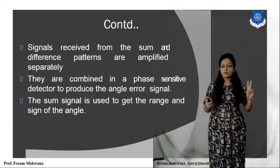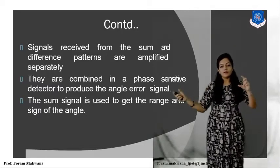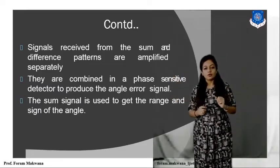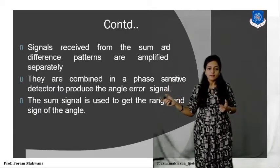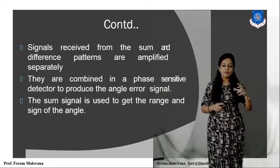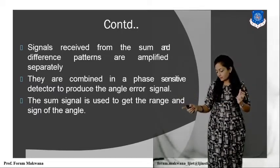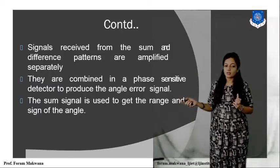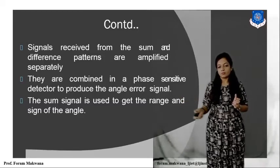The signal received will be in the waveform of sum and difference patterns. These two patterns are amplified with the help of an amplifier and combined at the phase sensitive detector to produce the error signal. The error signal is dependent on the angle — on which angle we need to rotate the antenna. The sum signal is used to get the range information, and the subtraction signal is used to get the information about the angles.